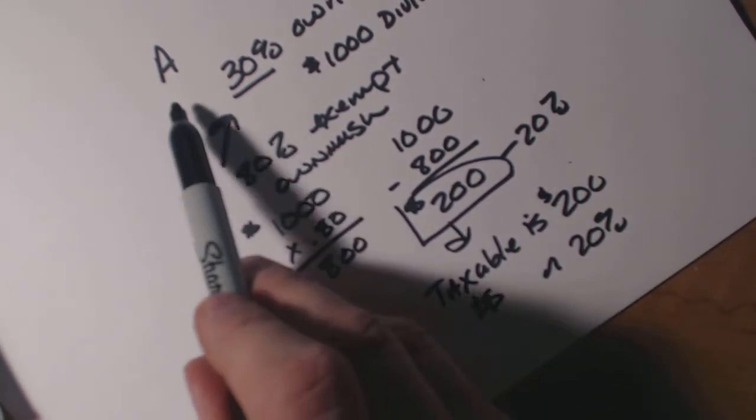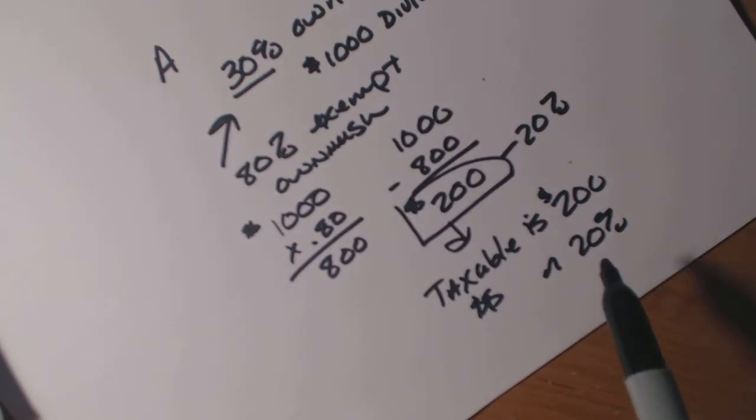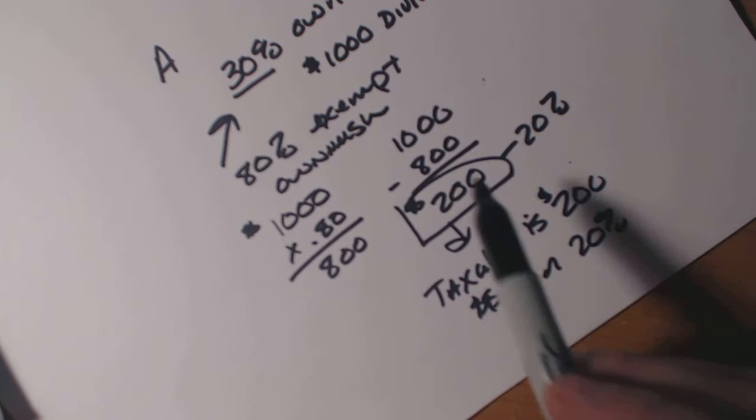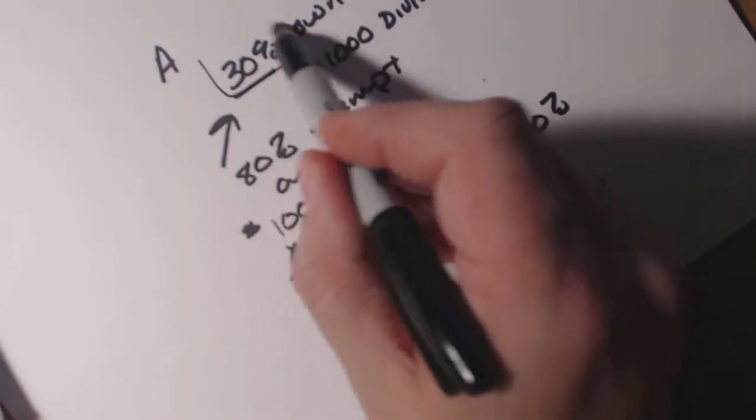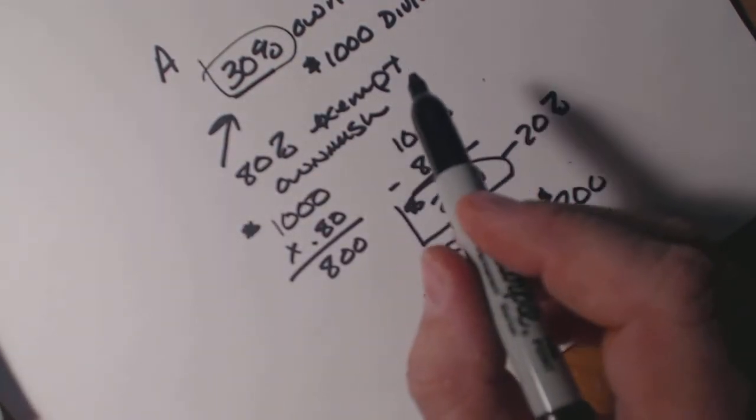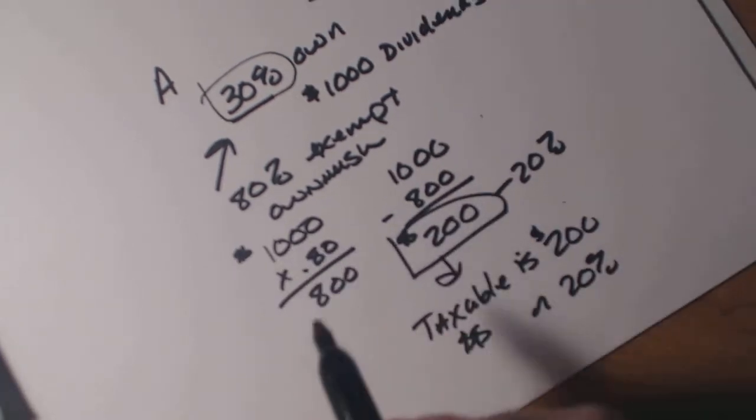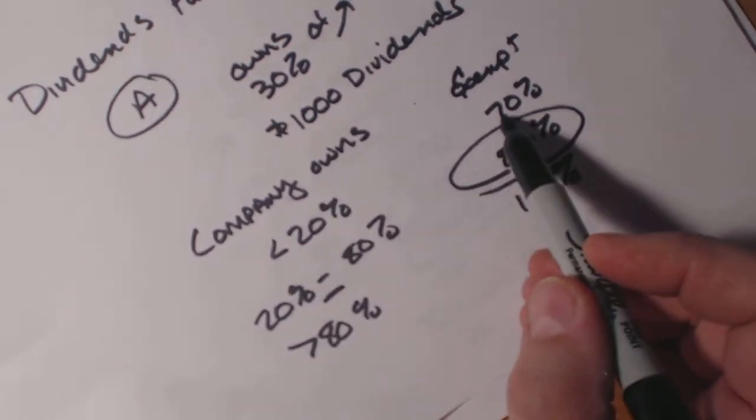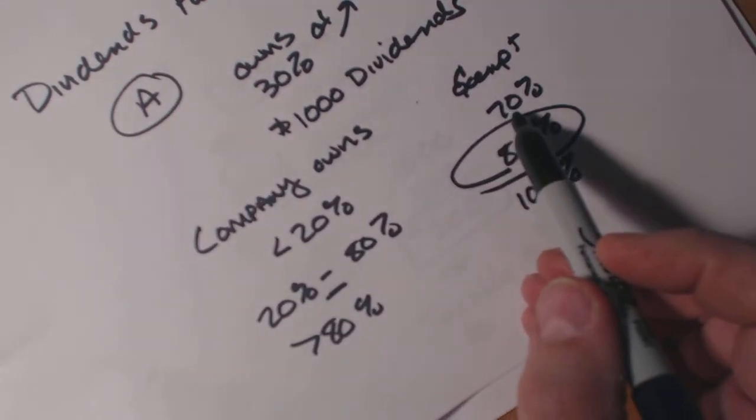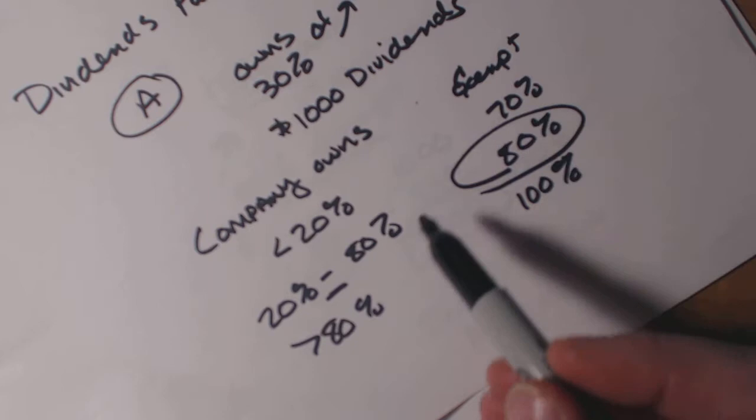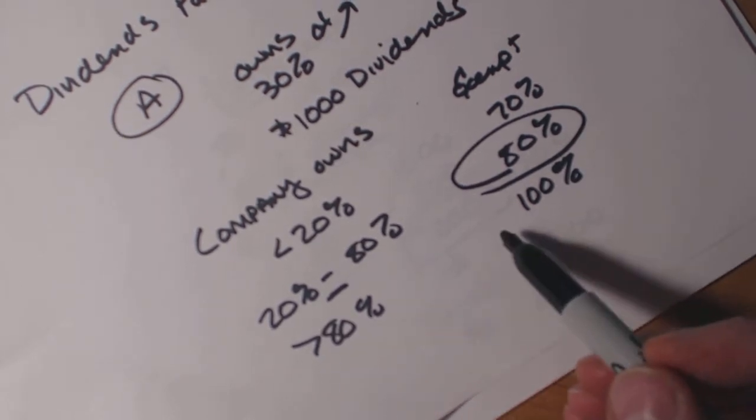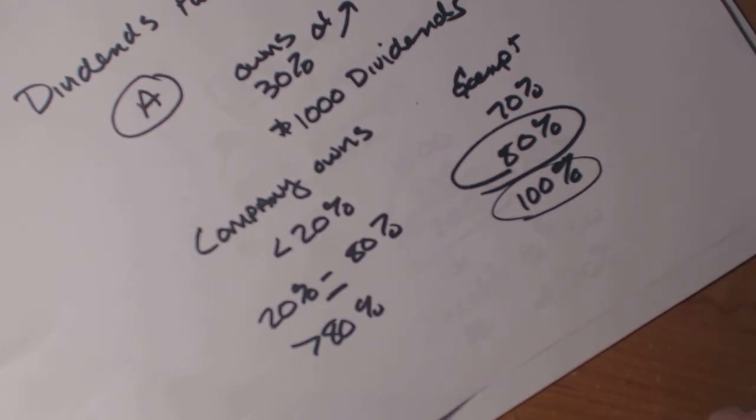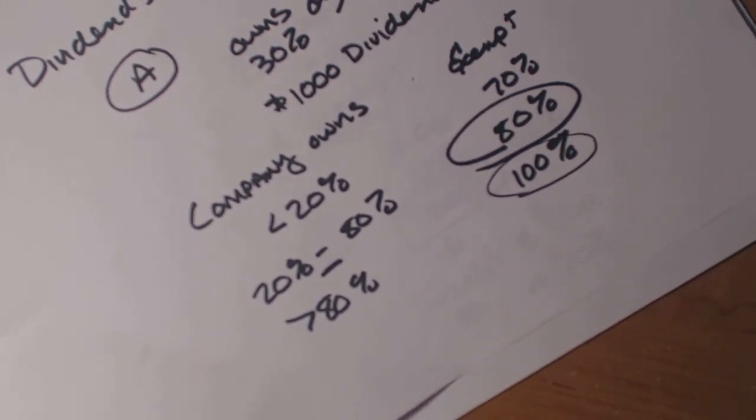So Company A will only have to pay tax on 20% of the amount of dividends they receive from B based on ownership. Now, if they own less than 20%, they would have 30% of the money coming in would be taxable. If they own more than 80%, then 100% of this would be exempt, or they would not pay any taxes on the dividends they received from one company to another.